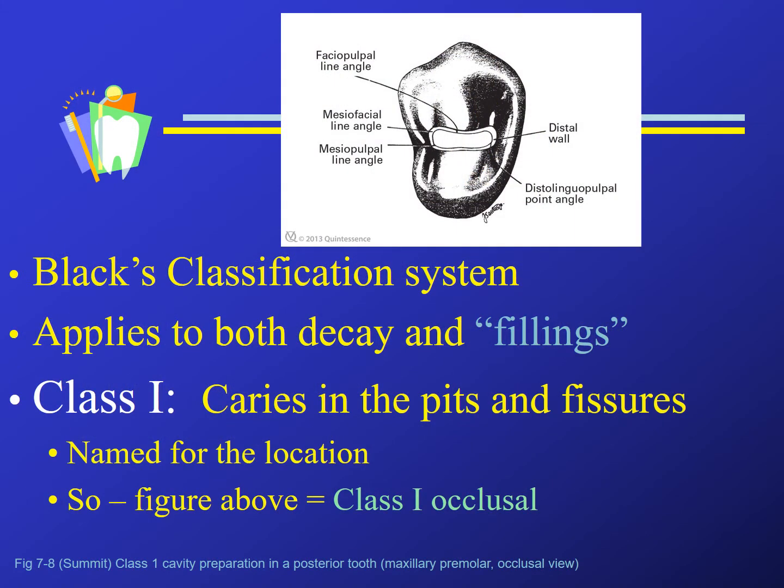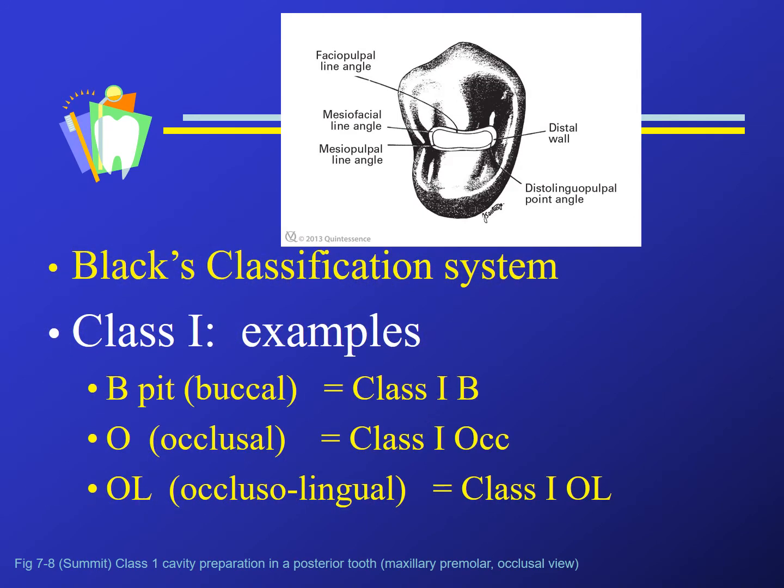Black's classifications apply to both decay or caries and fillings or restorations. Here in this picture, we see a class one occlusal preparation. In addition to Black's classification, we use the name of the surface to help describe and name the caries or the restoration — such as a class one buccal if it is located in a buccal pit, or a class one occlusal lingual if it happens to be occlusal and wraps to the lingual.